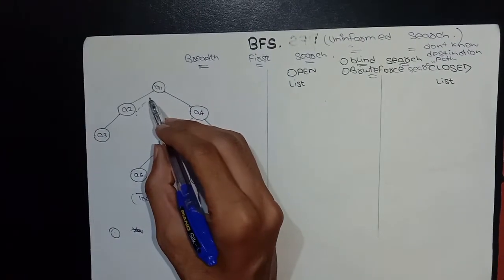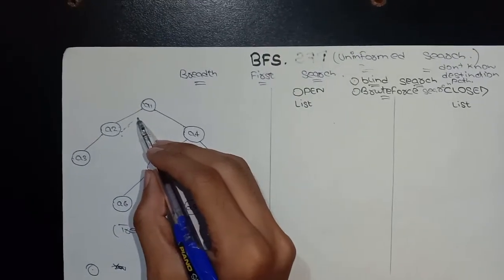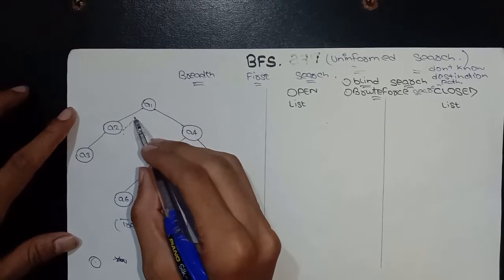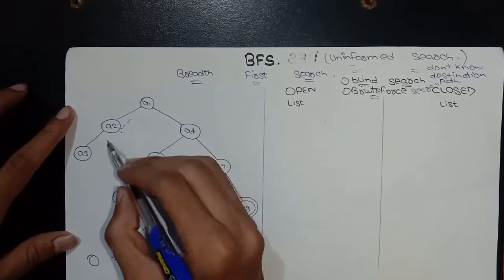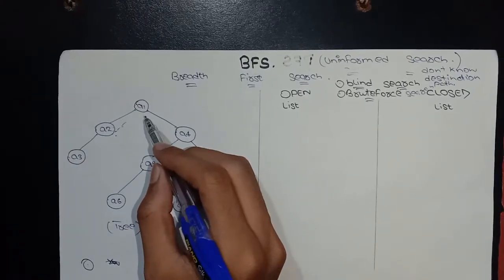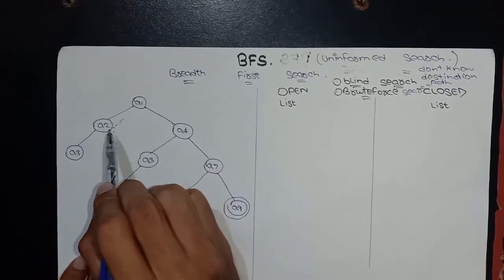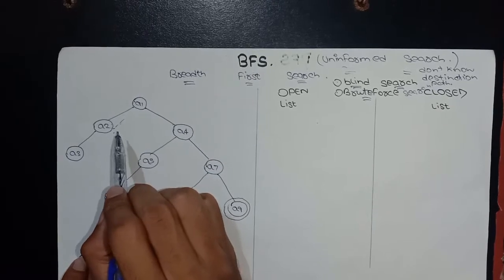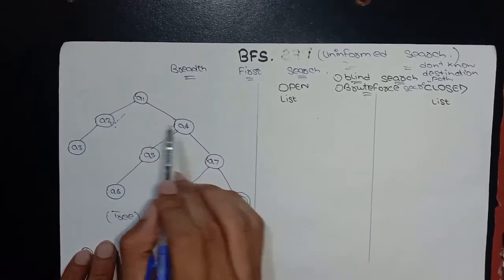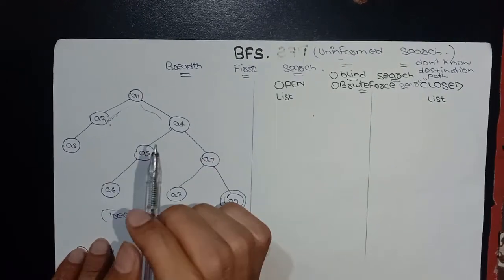BFS follows a queue data structure, and it is used whenever the goal state or destination node is near or close to the source node or starting node. BFS traverses the graph layer-wise and explores all the neighbor nodes which are directly connected to its source node.